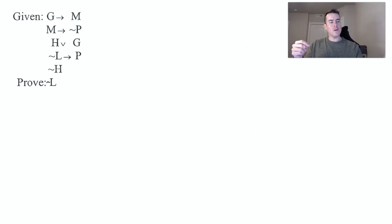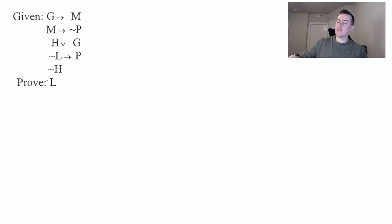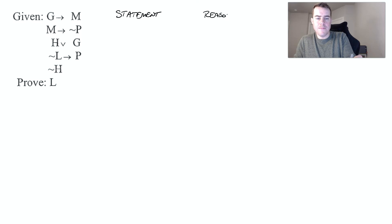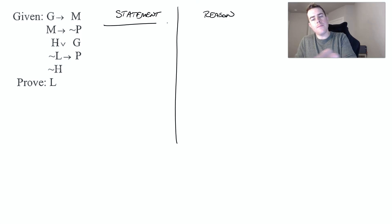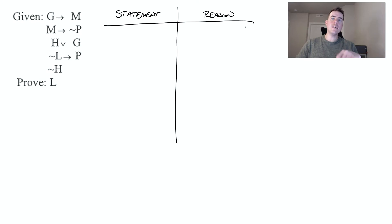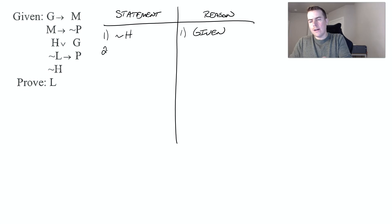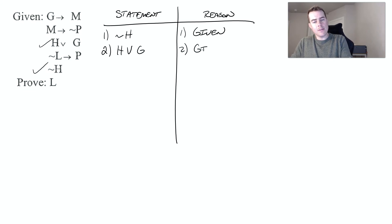Let's try one more. For this second example, we're given these statements and we're trying to prove L. I like to start with single letters, and I see not H right off the bat, so I write down not H — that was given. Then I look for something else with H, and I see H or G, which was also given.